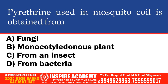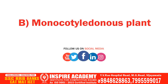Pyrethrine used in mosquito coil is obtained from which of the following? Options: Fungi, Monocotyledonous plant, From an insect, From bacteria. The correct option is Monocotyledonous plant.